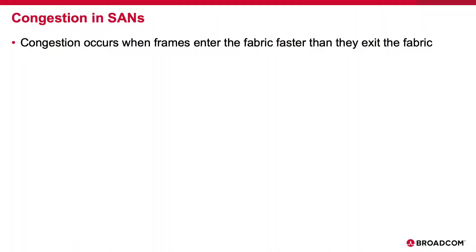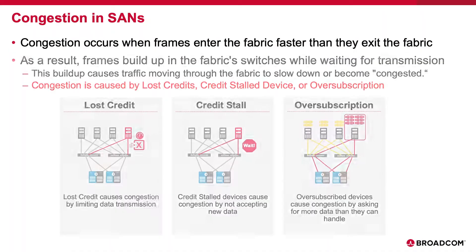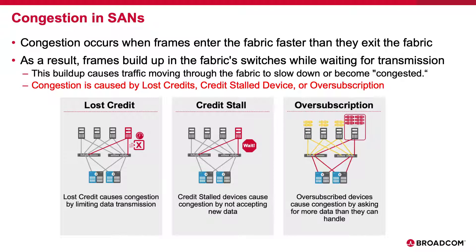When frames enter the fabric faster than they exit, buffer credits are exhausted and congestion happens. As a result, traffic slows down. There are three root causes to this: lost credits, credit stall, and over-subscription. Lost credits are usually due to physical error issues — cables or SFPs. Credit stall is when a device has an issue that means it doesn't release buffers in a timely fashion. We normally refer to this as a slow drain device.